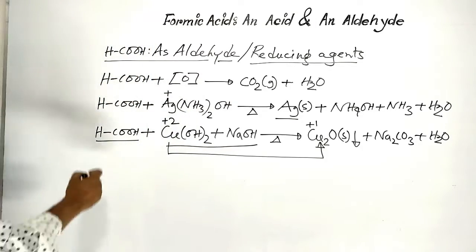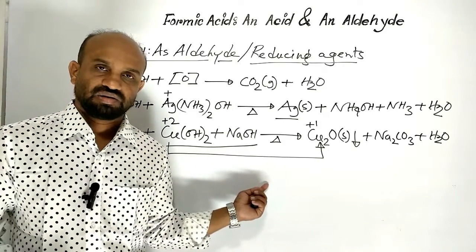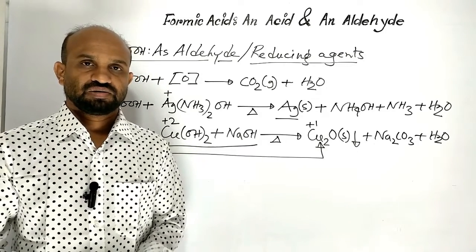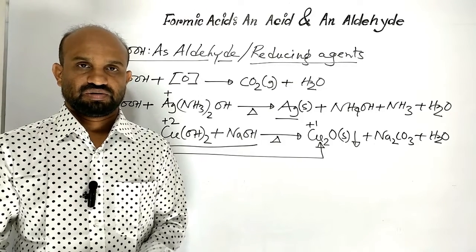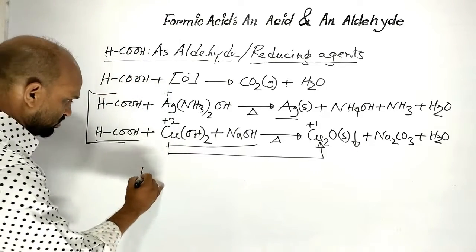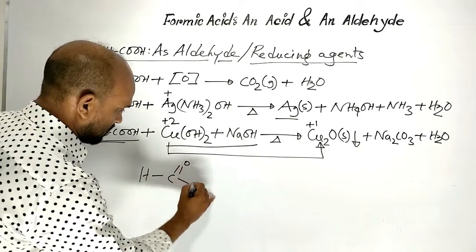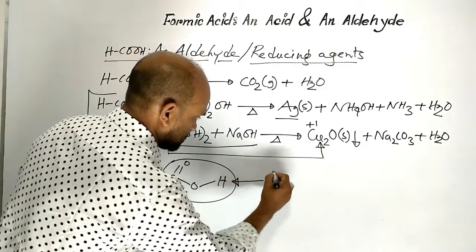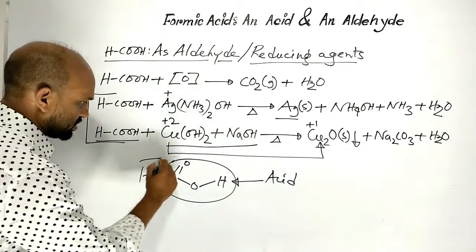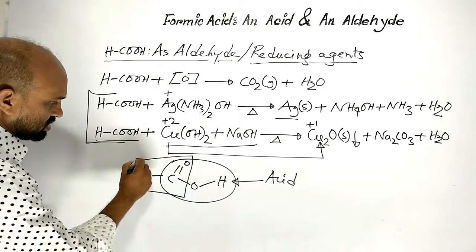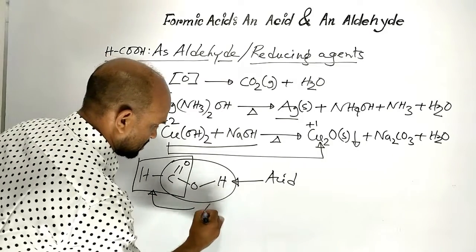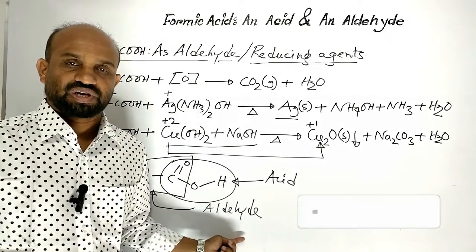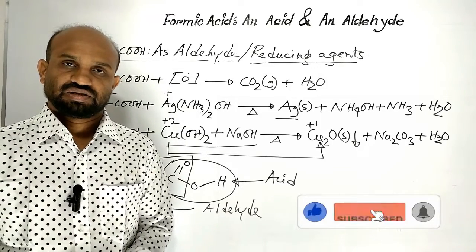So methanoic acid acts as both an aldehyde and an acid. Tollens' reagent and Fehling's solution have been discussed in detail in the carbonyl compounds chapter. To conclude: formic acid, or methanoic acid, contains a carboxyl group — that is why it acts as an acid. At the same time, it contains an aldehyde group — that is why it acts as an aldehyde. This is all about formic acid that acts as both an acid and an aldehyde. Thank you very much.